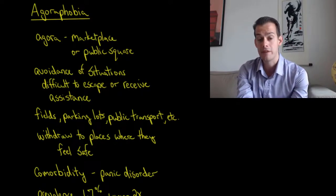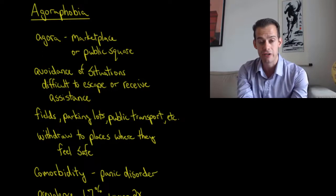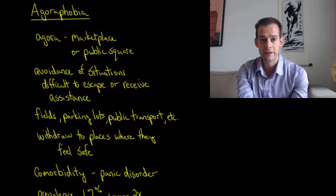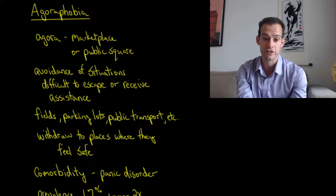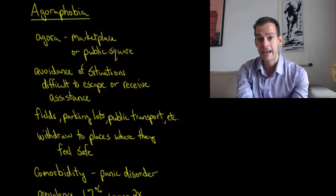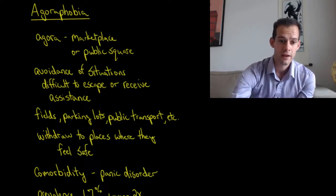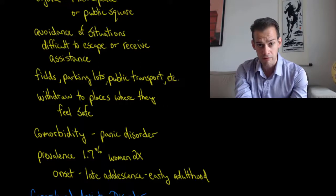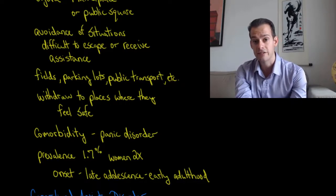Now there's comorbidity here with panic disorder and part of the reason for this is that people might have a panic attack in a public space and as a result they now have anxiety associated with that. They're worried that they'll have another panic attack in a situation where it would be hard for them to get help. And so it's fairly common to see diagnosis of panic disorder. The person's having panic attacks and as a result of these panic attacks they begin to withdraw from certain situations and in extreme cases they may stay in their home or apartment for extended periods of time and feel that they have too much anxiety to go anywhere else. Now the prevalence for agoraphobia is about 1.7 percent and like several other anxiety disorders it's about twice as common in women compared to men and the onset generally occurs in late adolescence or early adulthood.